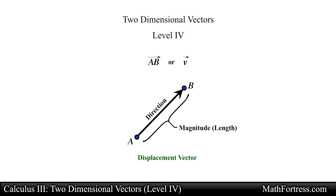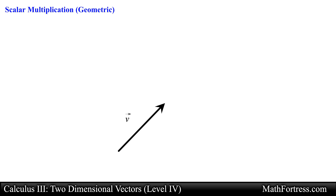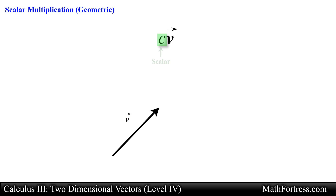Let's go over the first vector operation: scalar multiplication. This operation consists of multiplying a vector by a real number C, denoted as C times vector V. The real number C is referred to as a scalar. Note that a scalar is not a vector, so we need to make sure we don't write an arrow on top like we do with vectors. This way we can distinguish a scalar from a vector.